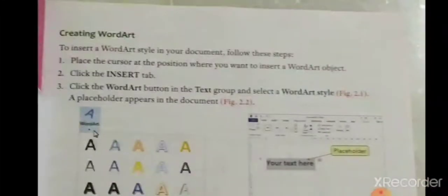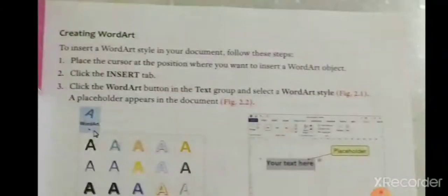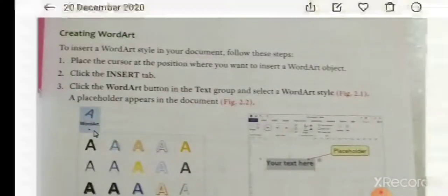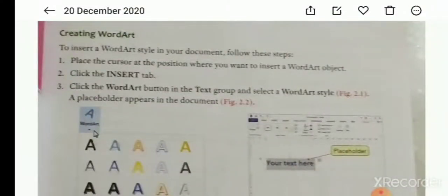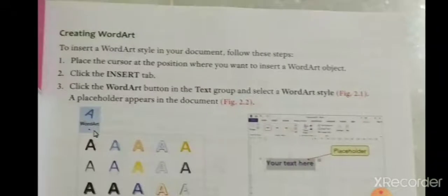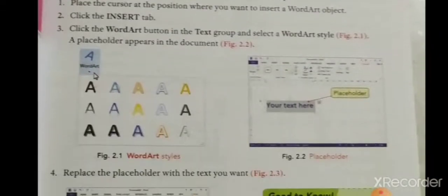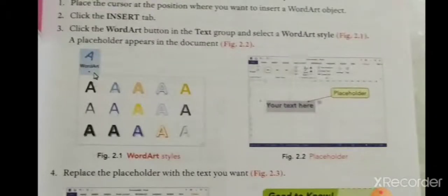Click the Insert tab. In the Insert tab, click the WordArt button in the Text group and select a WordArt style. The placeholder then appears in the document.